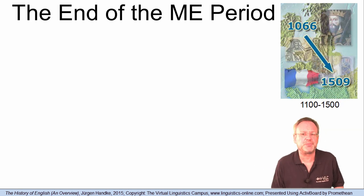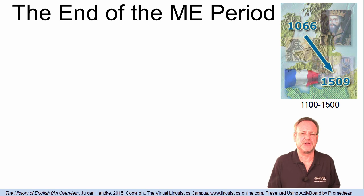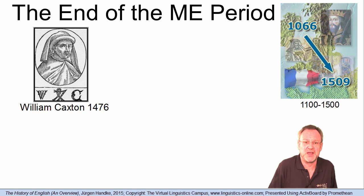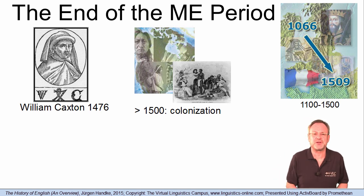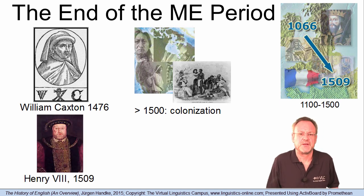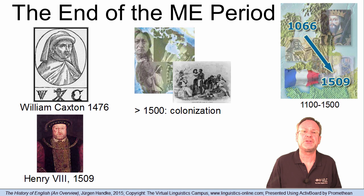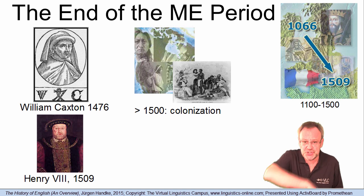The end of the Middle English period is marked by several historical incidents. The introduction of the printing press to England in 1476 by William Caxton led to a standardization of the English language, and the beginning of colonization after the discovery of America in 1492 eventually led to a global spread of the English language. And then, of course, the inauguration of Henry VIII in 1509, who eventually cut the links to Rome and the Catholic Church. So by 1500, English had begun to obtain a new position, from a regional European language to a global system of communication.